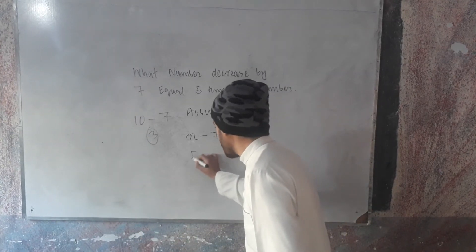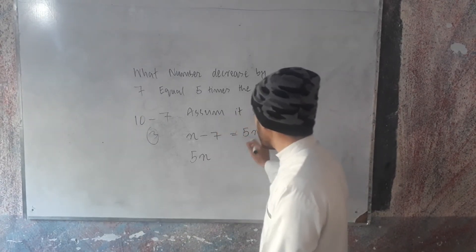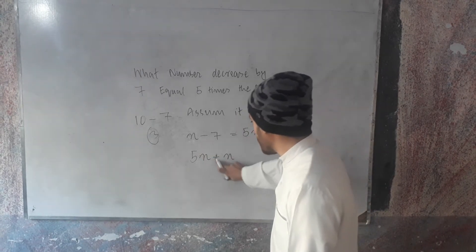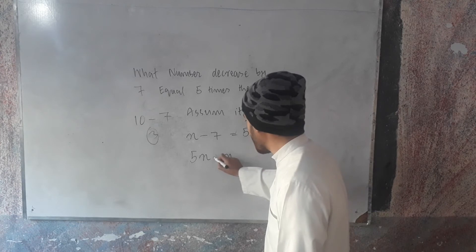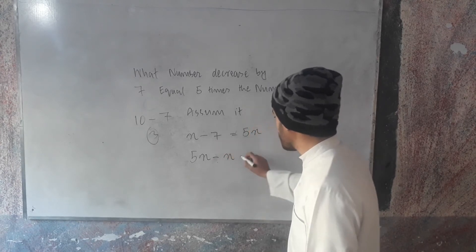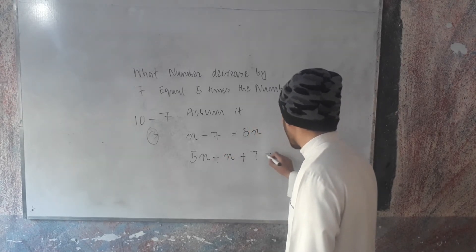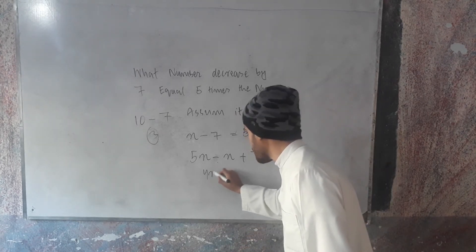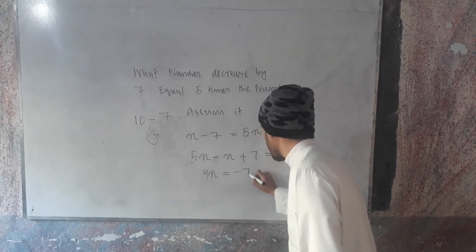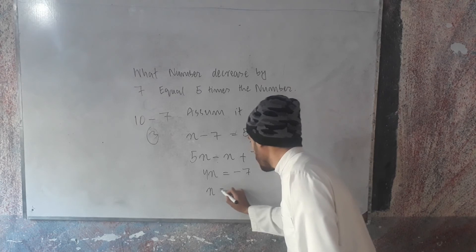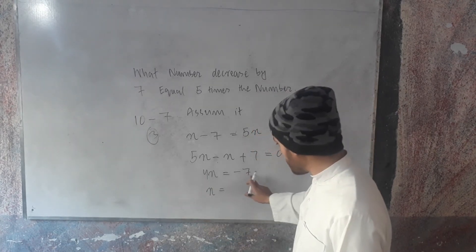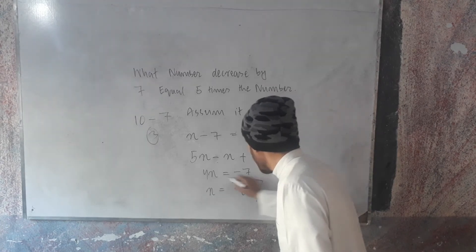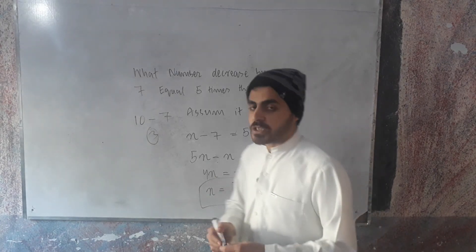Rearranging: minus x plus 7 equals 0, so 4x equals minus 7, and x equals minus 7 divided by 4. This answer is the correct option.